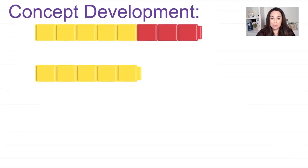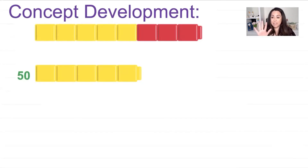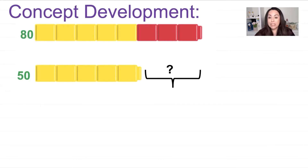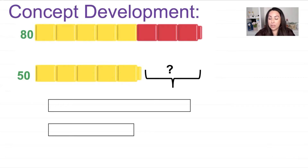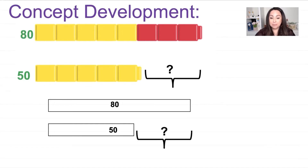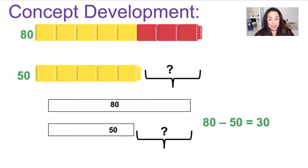Now I'm going to take those same cubes and pretend that each cube represents a 10. Looking at the cubes on the bottom, I have five yellow cubes: 10, 20, 30, 40, 50. So I have 50 on the bottom. On the top I have five yellow and three red: 10, 20, 30, 40, 50, 60, 70, 80. What is the difference? Remember each cube is a 10. The number sentence is 80 take away 50 and the difference is 30. You can see the difference is 30 on both the top and bottom tape diagrams.